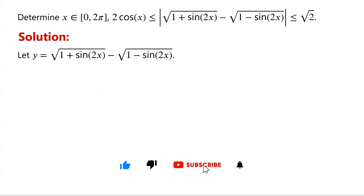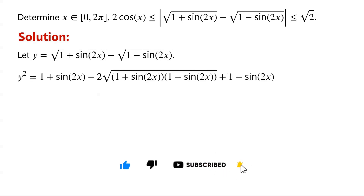Then y² equals (1 + sin 2x) minus 2 times the square root of (1 + sin 2x)(1 - sin 2x), plus (1 - sin 2x). The sin 2x and negative sin 2x cancel.